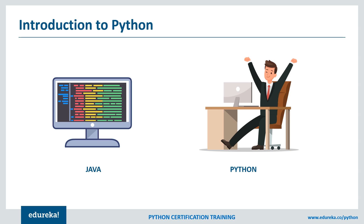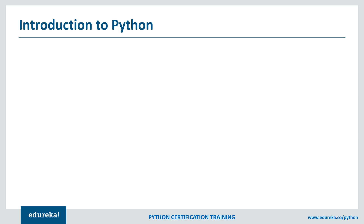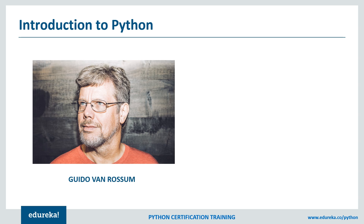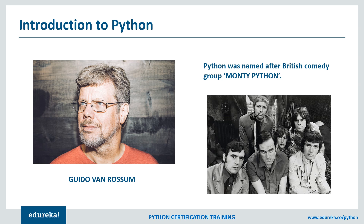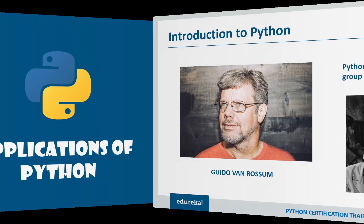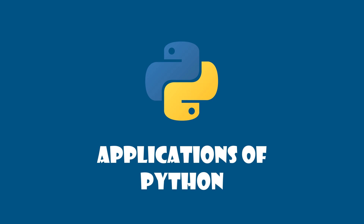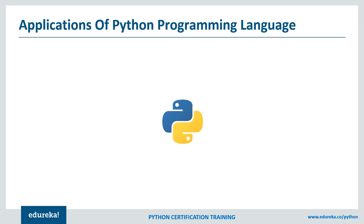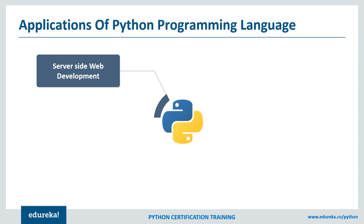Python was created in 1991 by a Dutch programmer named Guido van Rossum. It has a funny story behind its name — the creator was very fond of a comedy series called Monty Python, so the name came from there. Python has web frameworks like Django and Flask which we can use for server-side web development.